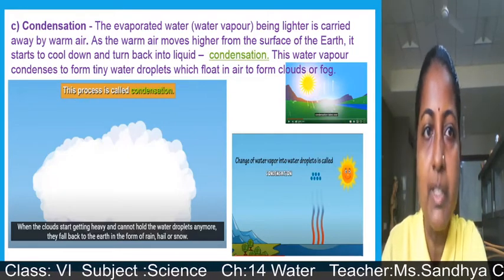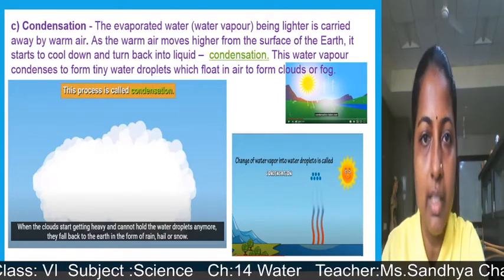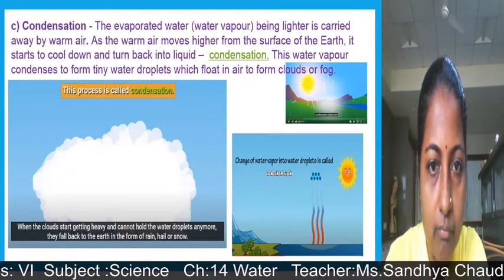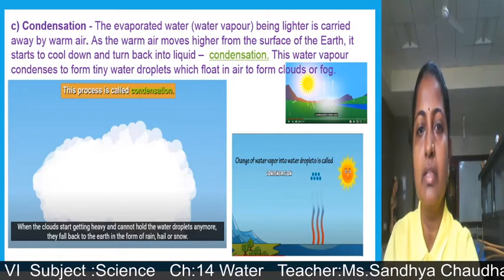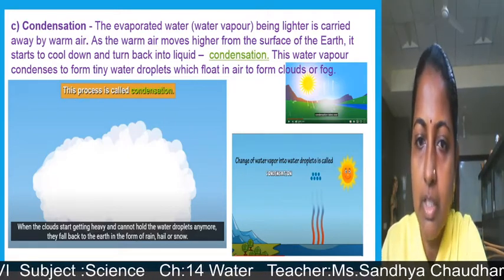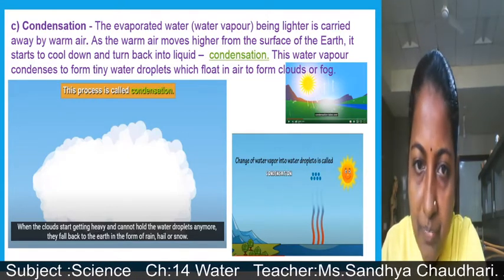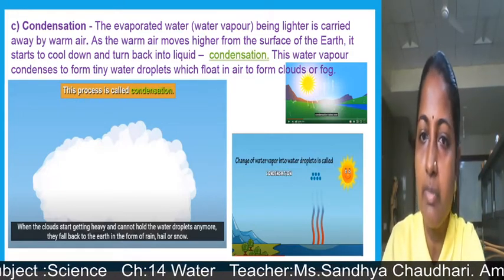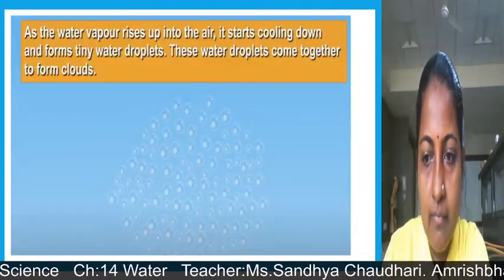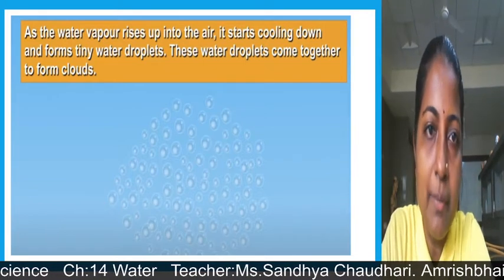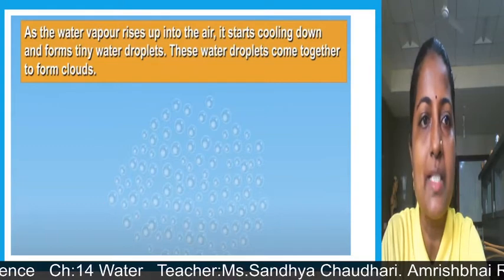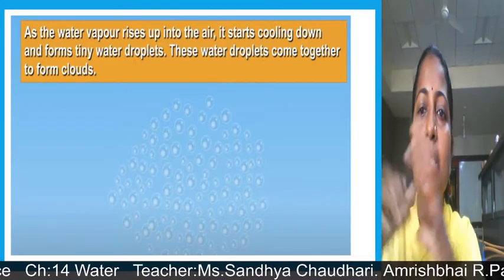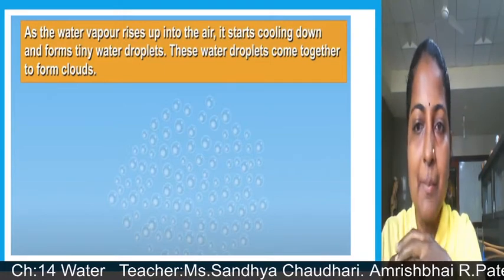This water vapor condenses to form tiny water droplets which float in air to form clouds or fog — this process is called condensation. As you can see in the figure, the water body is heated by the sun, then water vapors rise up and cool in the higher atmosphere, converting into tiny drops of water. These water droplets come together to form clouds.